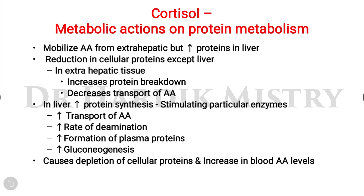Metabolic actions of cortisol on protein metabolism: it mobilizes amino acids from extra-hepatic tissues such as muscles, while increasing proteins in the liver. In extra-hepatic tissues there is increased protein breakdown and decreased transport of amino acids, so protein breakdown is the net effect. In the liver, there is protein synthesis due to stimulation of particular enzymes.